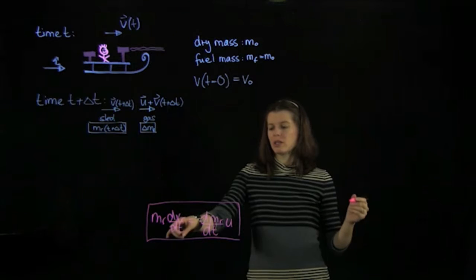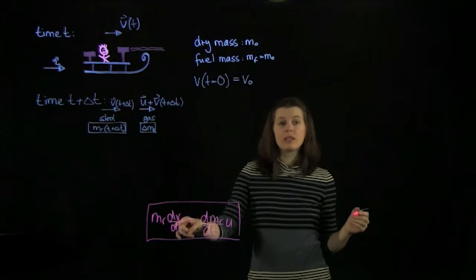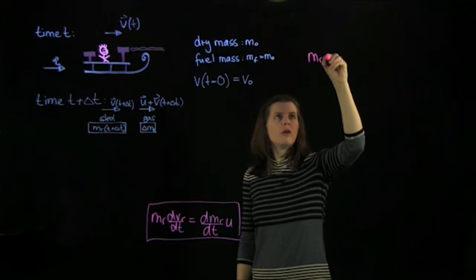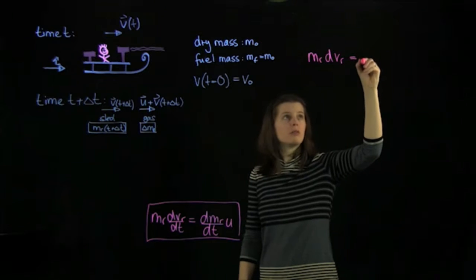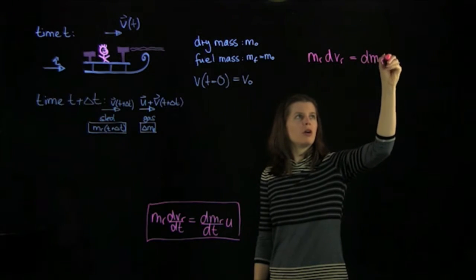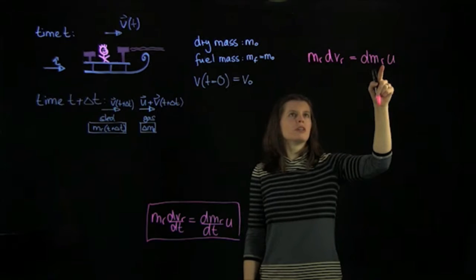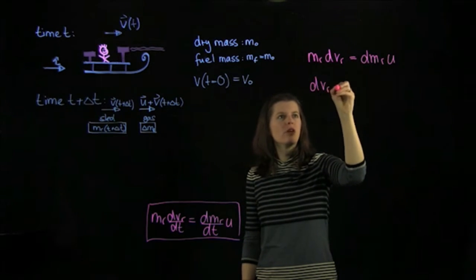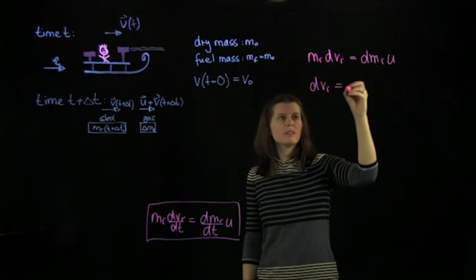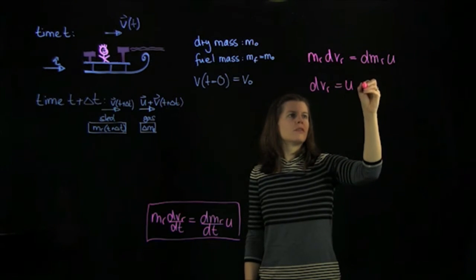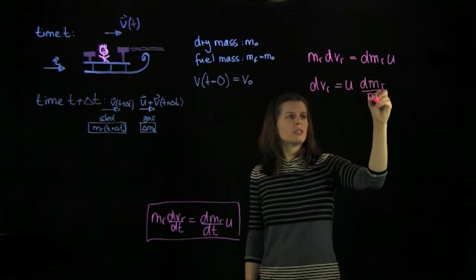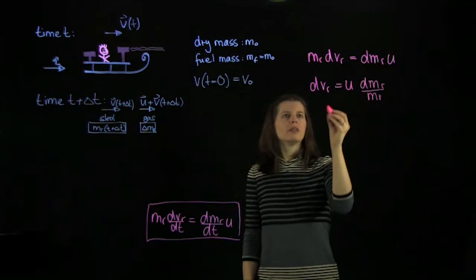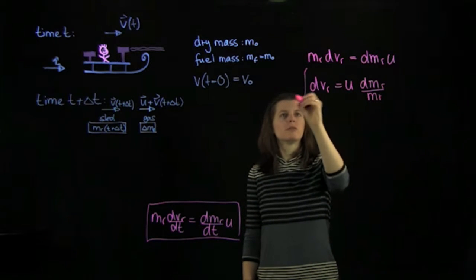What we're going to do is first we're going to multiply by dt. So that falls away. And we're left with mr dvr equals dmr u. And we're going to shuffle the m onto the other side. And we're left with dvr equals u as a constant, so that goes up front. And then we have dmr over mr. That's an equation that we can integrate now.